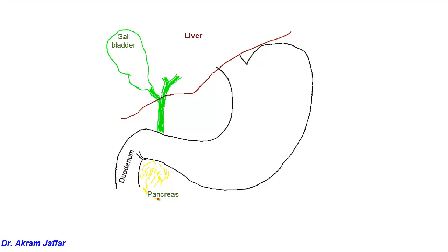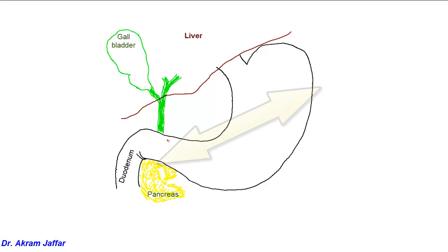This is the region of the head of the pancreas; the region of the uncinate process is located here. The pancreas is a retroperitoneal structure and lies opposite the posterior abdominal wall. The head of the pancreas, located within the C-shape of the duodenum, is at a lower level than the rest of the pancreas, which extends behind the stomach and behind the lesser omentum. The neck, body, and tail of the pancreas lie at a higher level than the head.